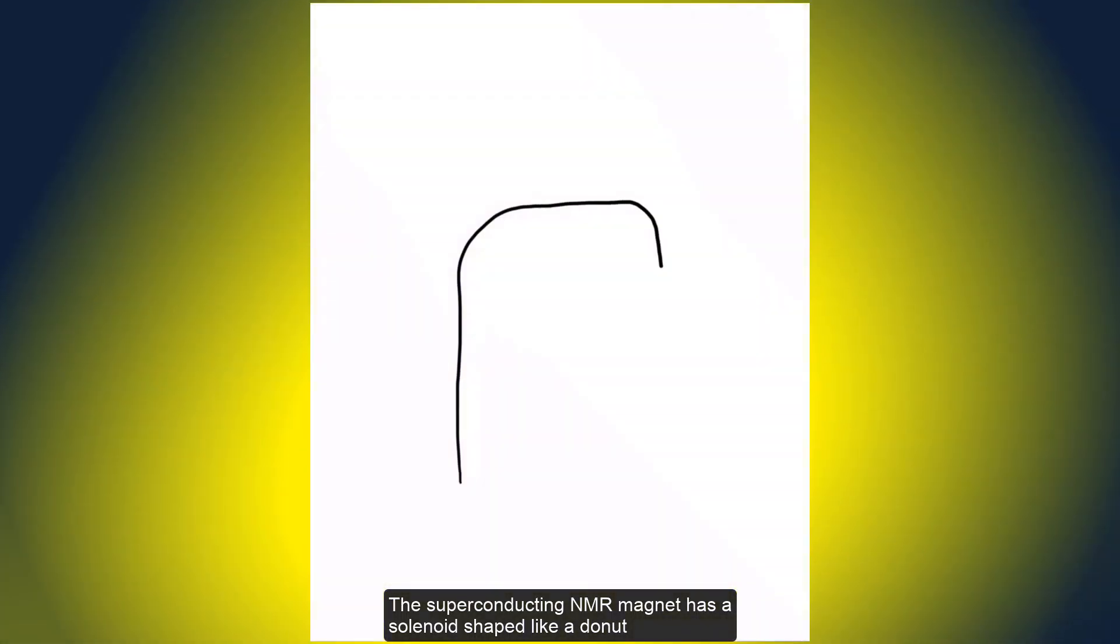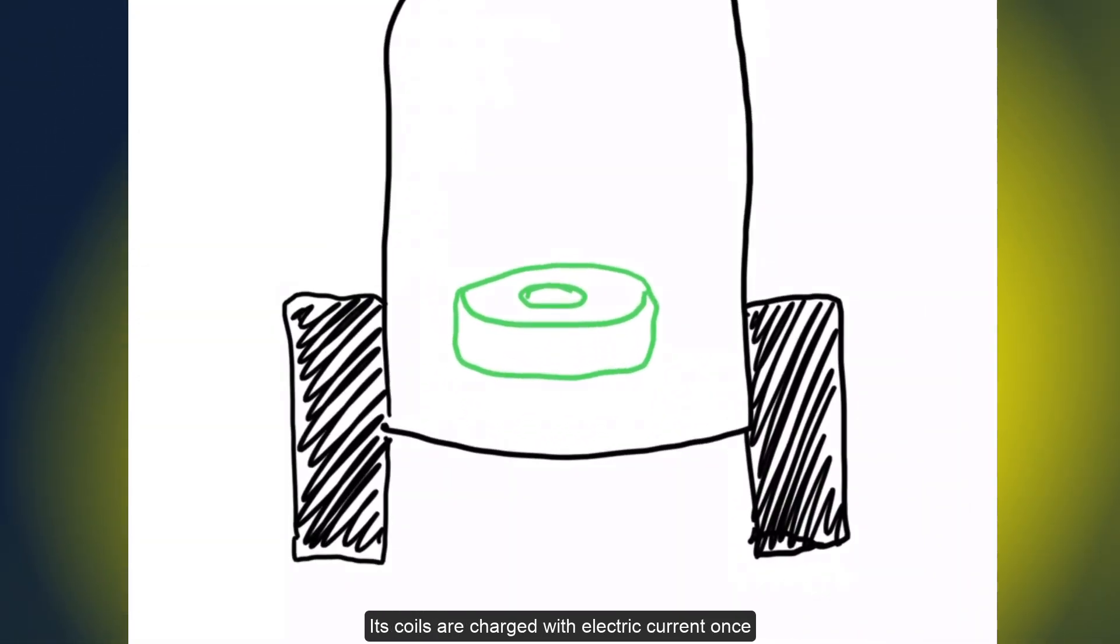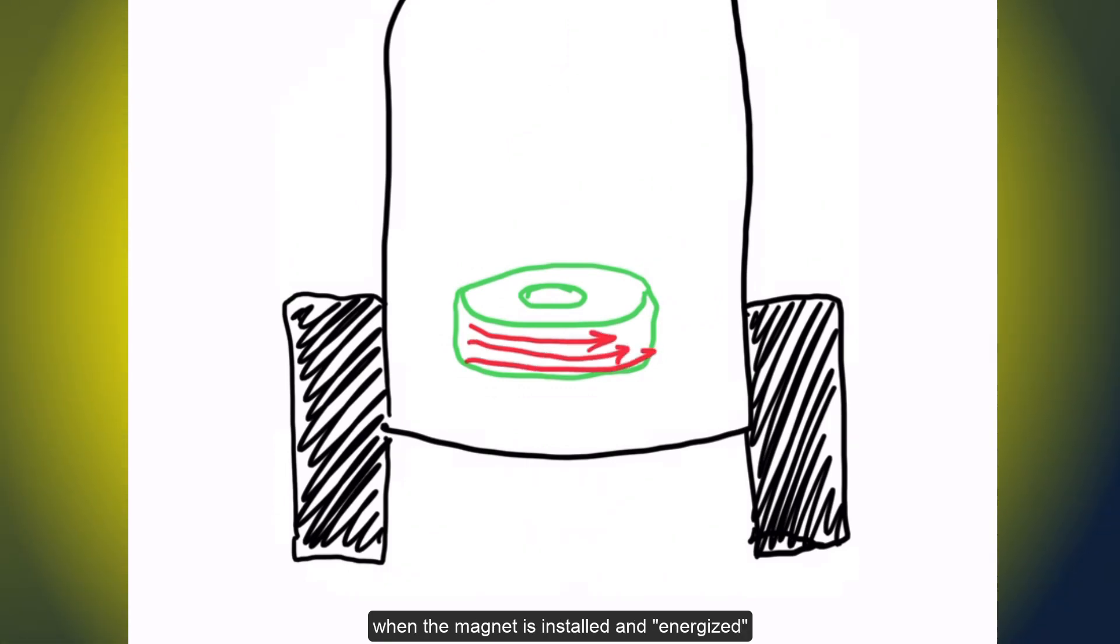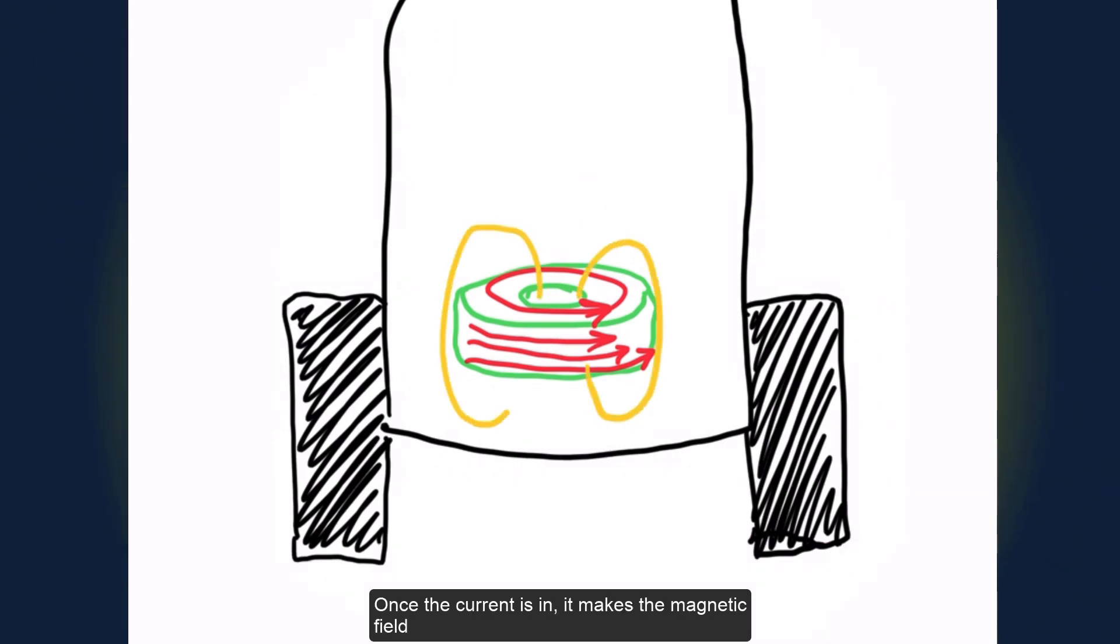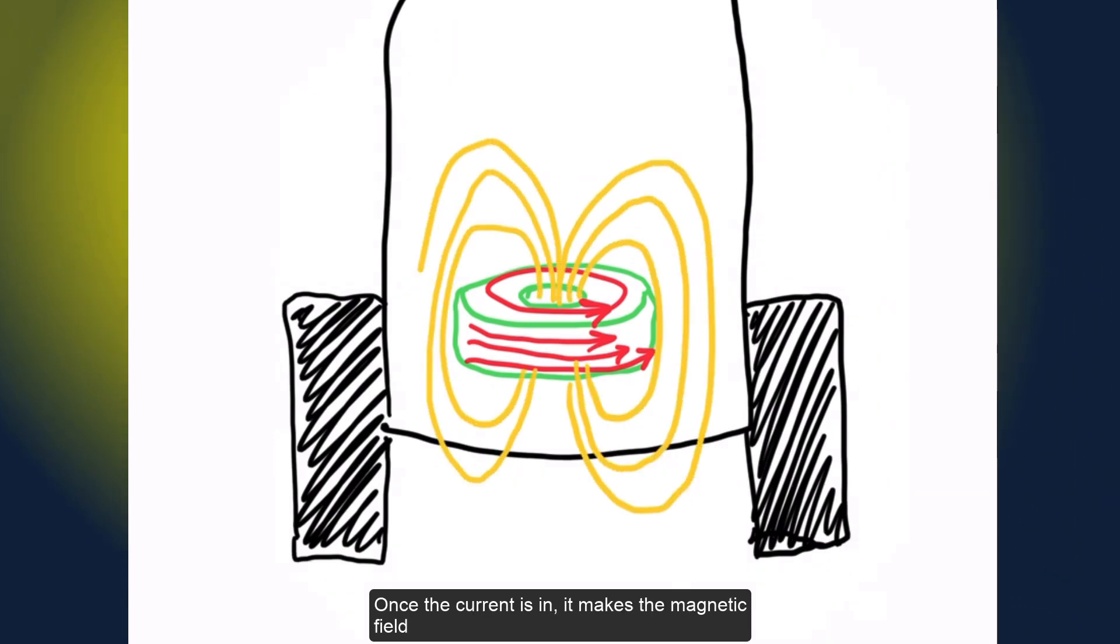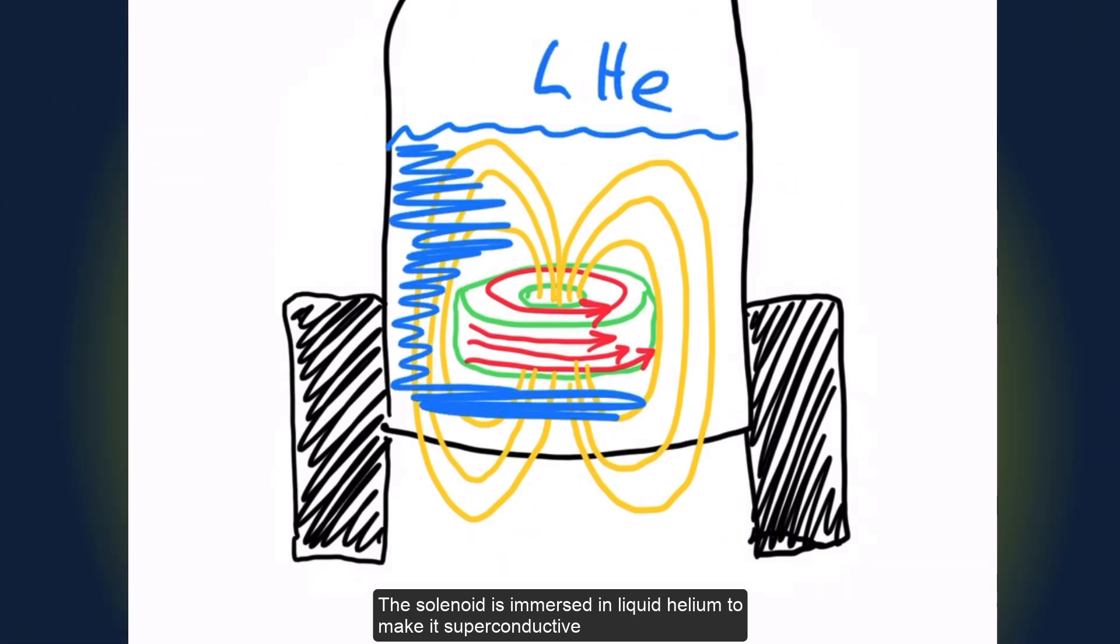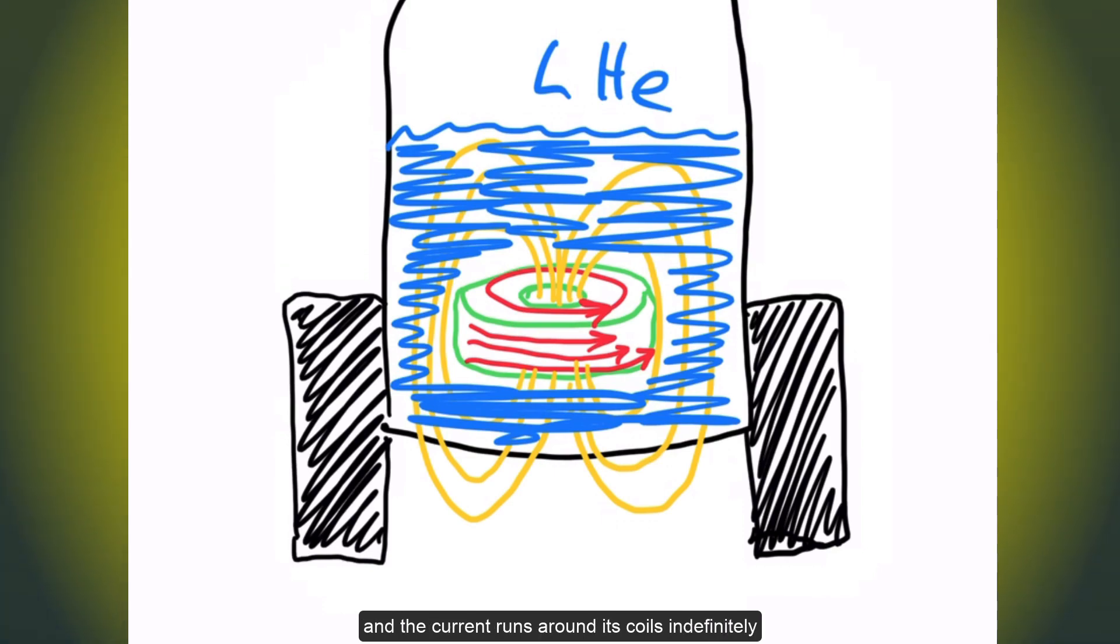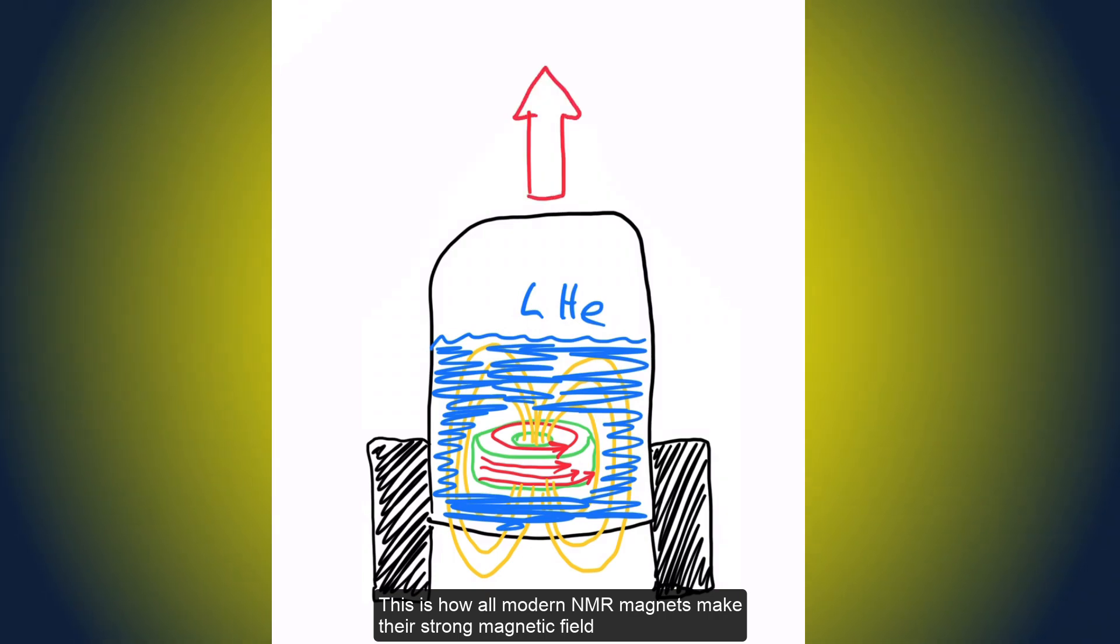The superconducting NMR magnet has a solenoid shaped like a donut. Its coils are charged with electric current once when the magnet is installed and energized. Once the current is in, it makes the magnetic field. The solenoid is immersed in liquid helium to make it superconductive. Therefore, it has no resistance and the current runs around its coils indefinitely. This is how all modern NMR magnets make their strong magnetic field.